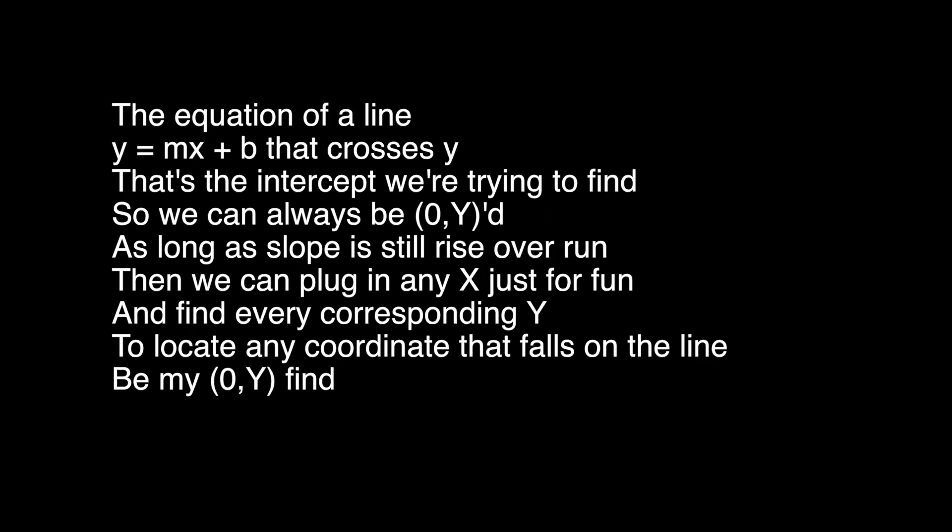The equation of a line: y equals mx plus b, that crosses y. That's the intercept we're trying to find. So we can always be zero comma y. As long as slope is still the rise over run, then we can plug in any extras for fun and find every corresponding y. To locate any coordinate that falls on the line — be my zero comma y find.